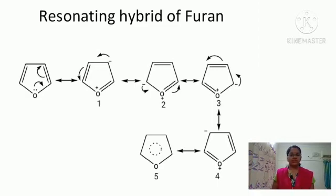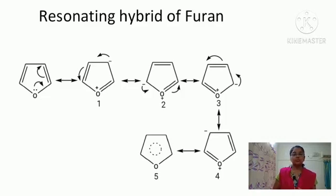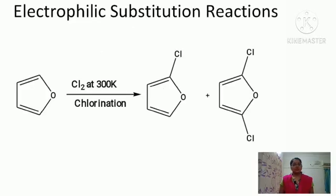From these resonating structures, the most contributing structures are the second and third — meaning when an electrophile attacks furan, it will mostly attack at the second position as well as the fourth position of the furan ring.